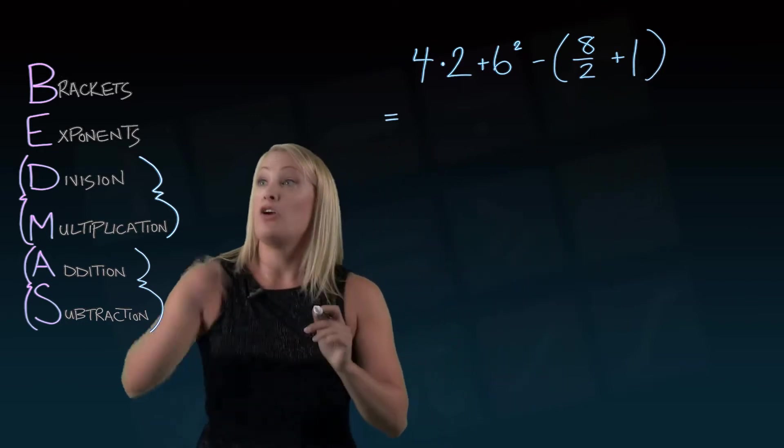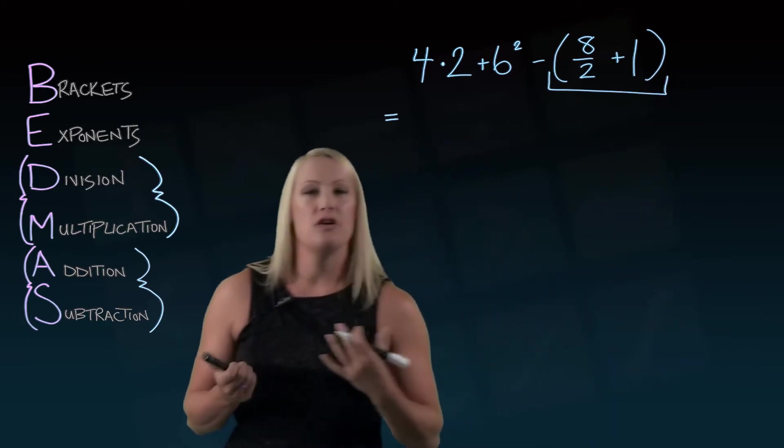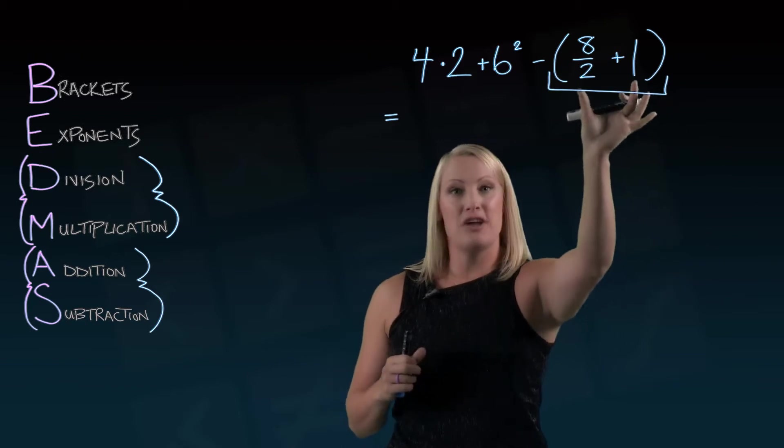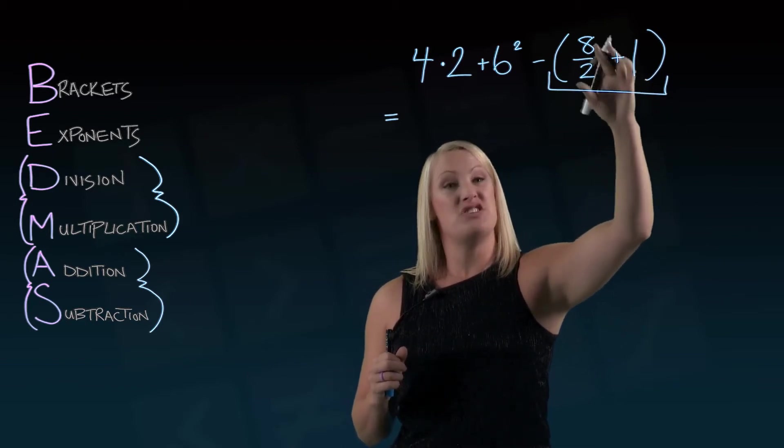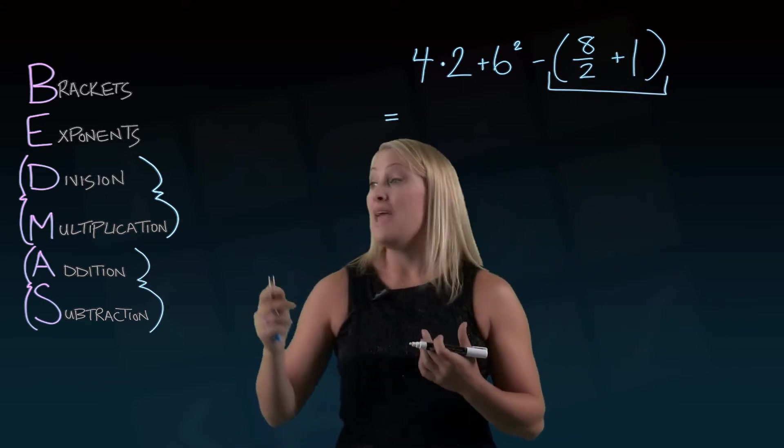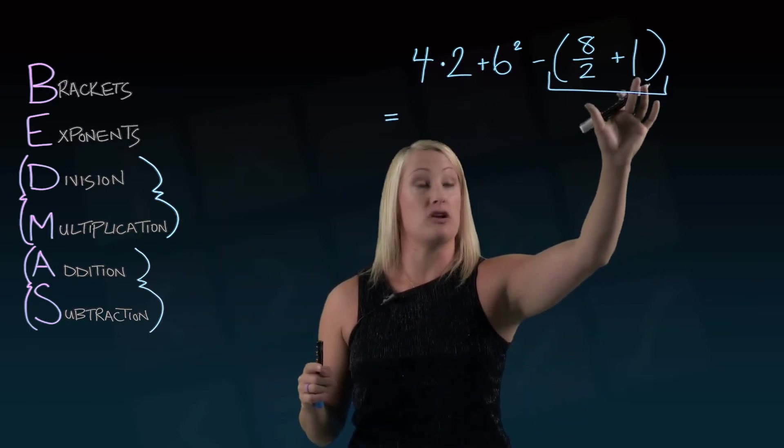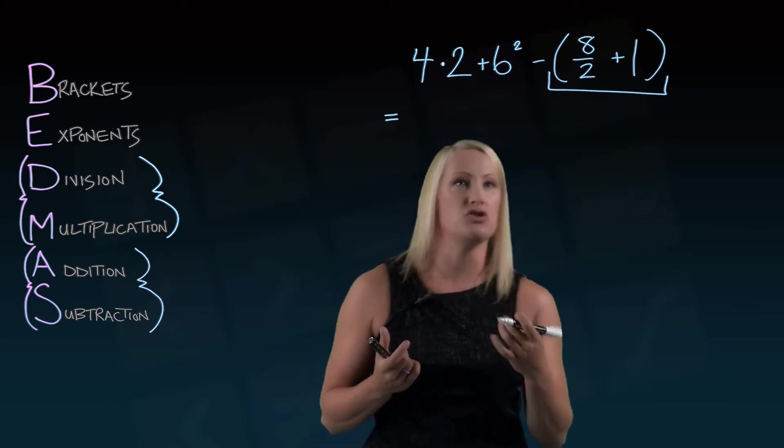Now we're going to start with the brackets. The brackets are right here. And something that's interesting about BEDMAS is not only do we have to use it for this question, but we actually have to use it for inside of the brackets as well. 8 divided by 2, I know it looks like a fraction, but a fraction is really just division. We have to do the division and multiplication before we can do the addition and subtraction. So I can't add those together first and then divide. I've got to do the division first.